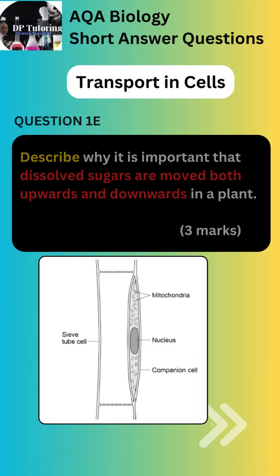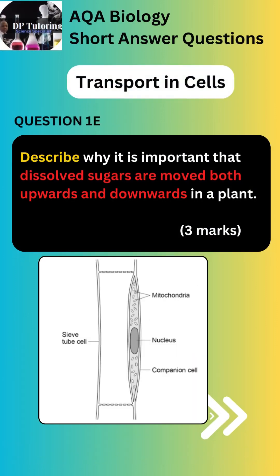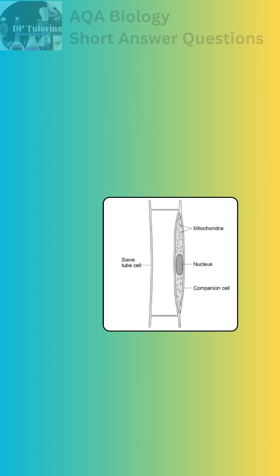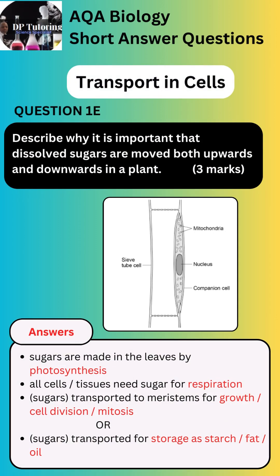The final part of the question asks you to describe why it is important that dissolved sugars move both upwards and downwards in a plant. The question values 3 marks, so you will need 3 points. The answers are: 1. Sugars are made in the leaves by photosynthesis. 2. All cells and tissues need sugar for respiration. 3. Sugars are transported to meristems for growth, cell division, mitosis. OR sugars are transported for storage as starch, fat, or oil.